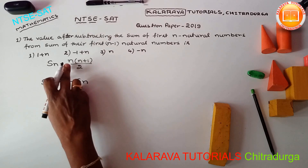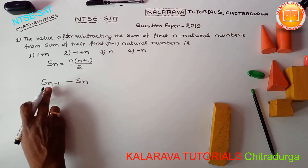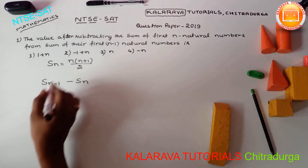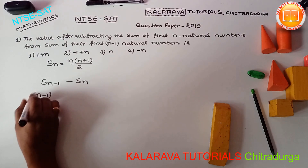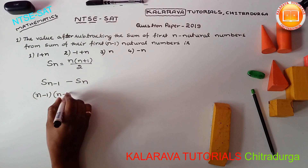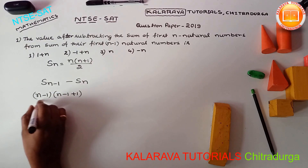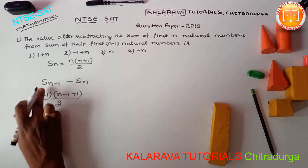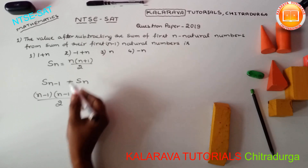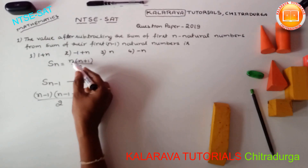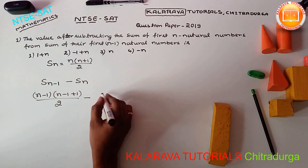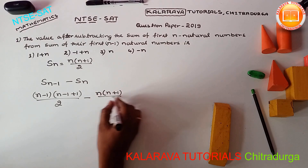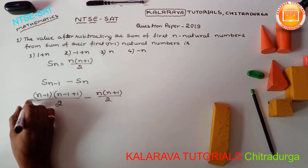In the place of N, we substitute N minus 1 into the formula. So S(N-1) becomes (N-1)(N-1+1)/2, which simplifies to (N-1)(N)/2. And Sn is N(N+1)/2.